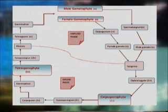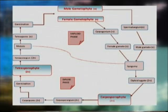The tetrasporophyte develops tetrasporangia in which meiosis or reduction division takes place and produces haploid tetraspores which give rise to the haploid gametophyte again. The life cycle is thus completed.